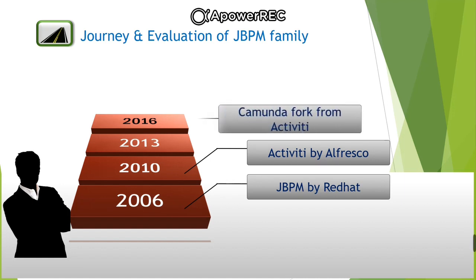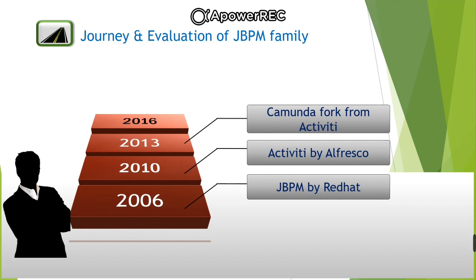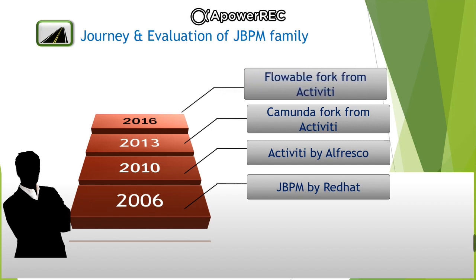Camunda was founded by Jakob Freund and Bernd Rücker in 2008 as a business process management consulting company. Over the next four years, Camunda built a consulting customer base of more than 250, and in March 2013 Camunda forked the Activiti project to launch Camunda BPM as an open source project. After that in 2016, Barrez and other contributors left Alfresco. The departing developers forked the Activiti code to start a new project called Flowable BPM in October 2016.